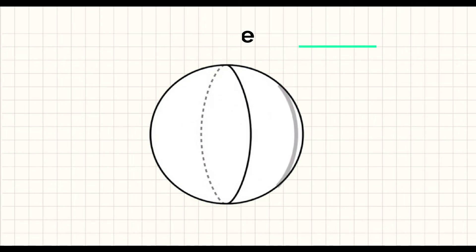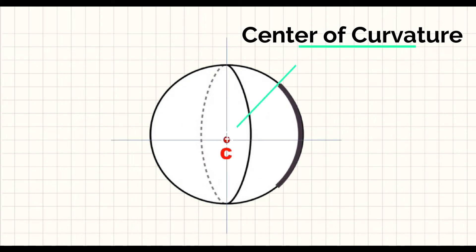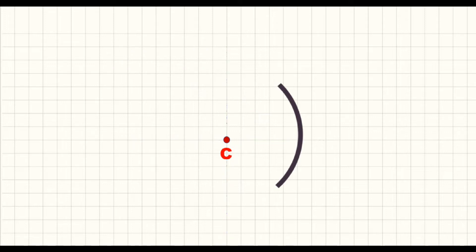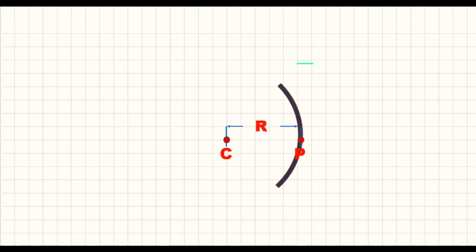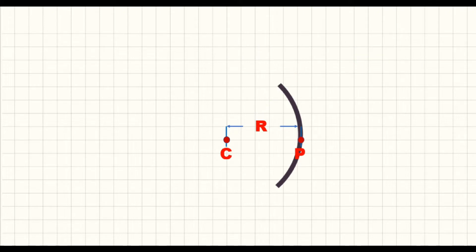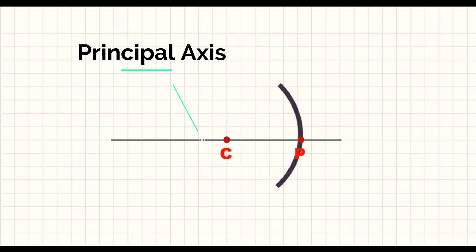Let us look at how spherical mirrors affect light rays to form images with different properties. In discussing the formation of images in spherical mirrors, terms used in connection with them should be clarified. The center of curvature is the point in the center of the imaginary sphere of which the mirror is cut. The aperture is the angular opening of the sphere that encloses the mirror through which the light rays enter; it also gives the size of the mirror. The pole is the midpoint of the curved surface of a spherical mirror, also called a vertex. The radius of curvature is the radius of the sphere of which a spherical mirror is a part — it is the distance between the pole and the center of curvature.